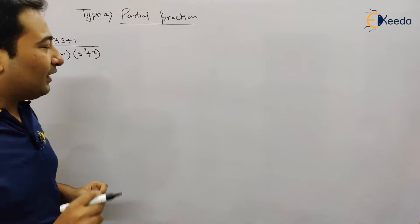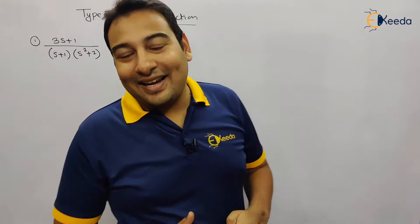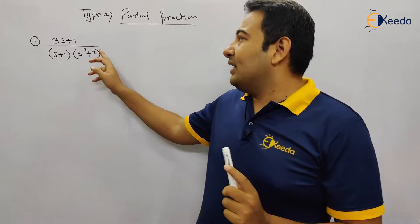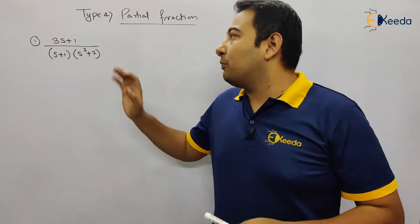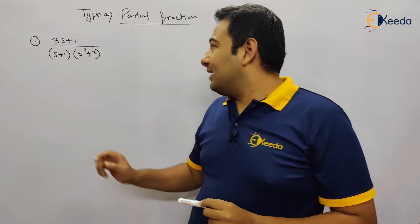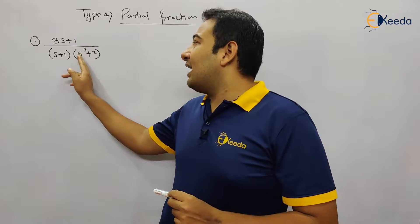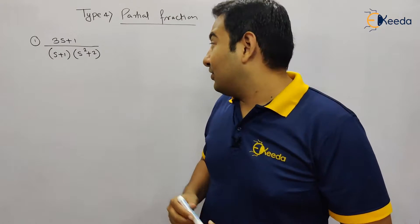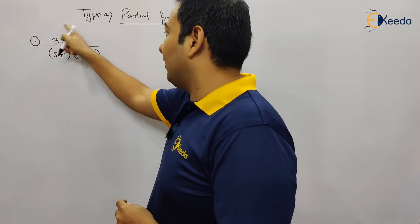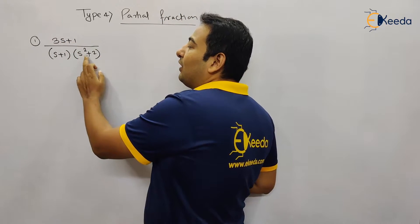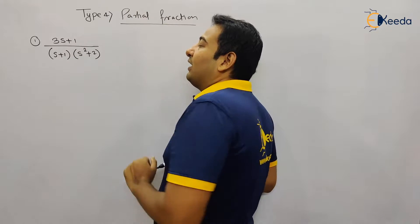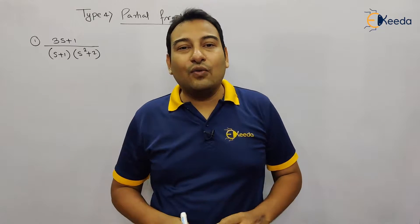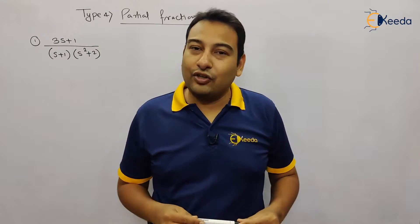This is my first problem. Let us understand why we use partial fraction. The concept is very simple: I want to find the inverse Laplace transform of this particular function, but the problem is that in the denominator two factors are in multiplication, therefore we cannot separate the Laplace inverse. To convert it into plus or minus, we use the partial fraction concept.